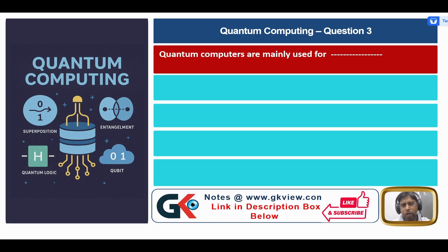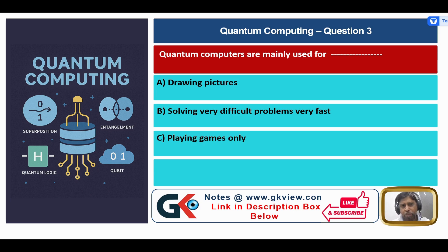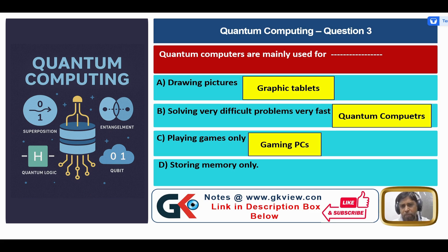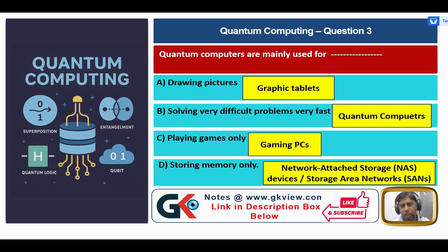Question 3: Quantum computers are mainly used for? A. Drawing pictures, B. Solving very difficult problems very fast, C. Playing games only, D. Storing memory only. Drawing pictures uses a graphic tablet. For playing games, we use gaming PCs. For storing memory, we use network-attached storage devices or storage area networks. So, the answer is B — Solving very difficult problems very fast.